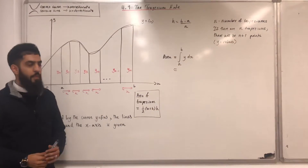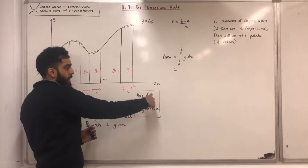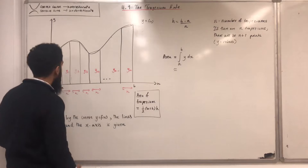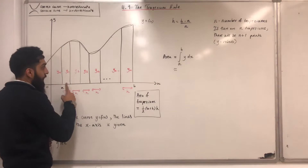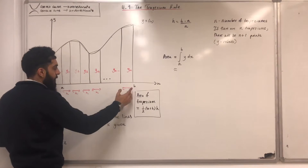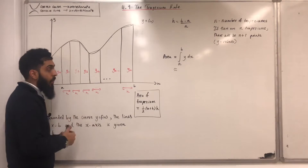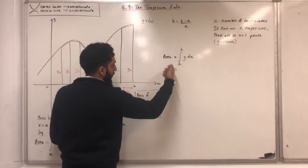I'm going to use this particular formula for the area of a trapezoid to work out the area of each of these trapezoids, add them together, and that will be my approximation.